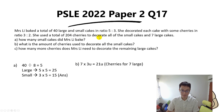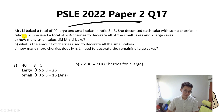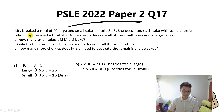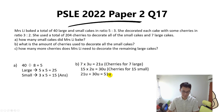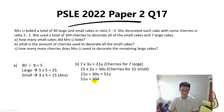Since 204 cherries are used to decorate all the small cakes and seven large cakes: each large cake needs 3 units of cherries, so 7 large cakes give us 7 times 3 = 21 units. For all 15 small cakes, each needs 2 units, so 15 times 2 = 30 units. Adding them together: 21 plus 30 = 51 units, which equals 204 cherries.